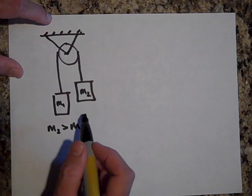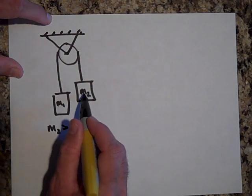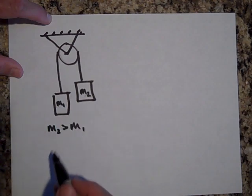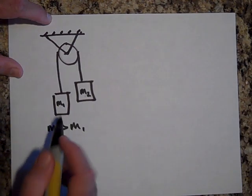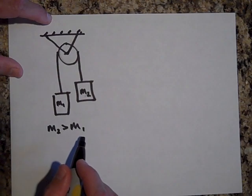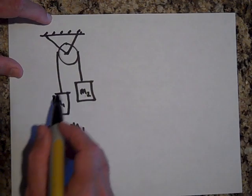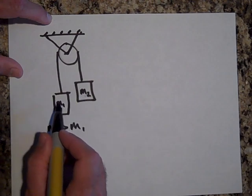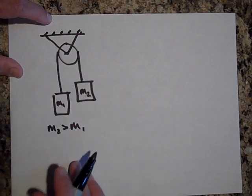The magnitude of the acceleration of M2 is the same for this one and this one. They both have the same magnitude of acceleration, even though this one goes up and this one comes down. That's because they're attached to a string. So if this is going two meters per second squared down, that's got to be going two meters per second squared up.